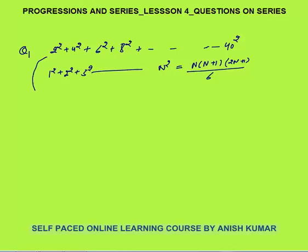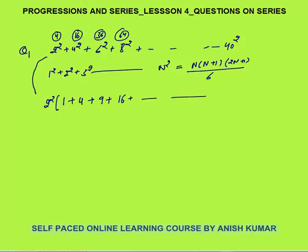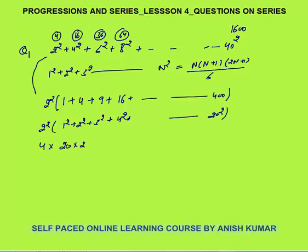What we can do is take 2² as common from the series. Taking 4 as common, we are left with 1² plus 2² plus 3² plus 4² up to 20². Now we can apply the formula: 4 into 20 into 21 into 41 by 6. Simplifying: 4 into 10 into 7 into 41, which is 70 into 41, giving 2870 as the final answer.